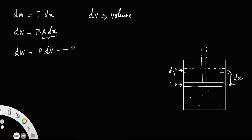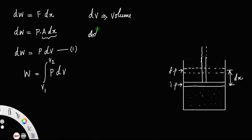Let us call that as equation one. In order to get the total work, you must integrate equation one — that is, integral of P dV from the initial volume V1 to the final volume V2, where V1 is the initial volume and V2 is the final volume. For an adiabatic process, we have the adiabatic relation between pressure and volume: PV raised to gamma equals a constant.